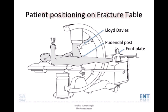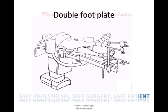The patient is positioned on a fracture table for this. The fractured leg is in the foot plate with the perineal post between the legs, and the non-fractured leg on the Lloyd Davis position, which is an uncomfortable position for most patients. Sometimes we use a double foot plate technique where the patients are in double foot plate, and these are more comfortable.